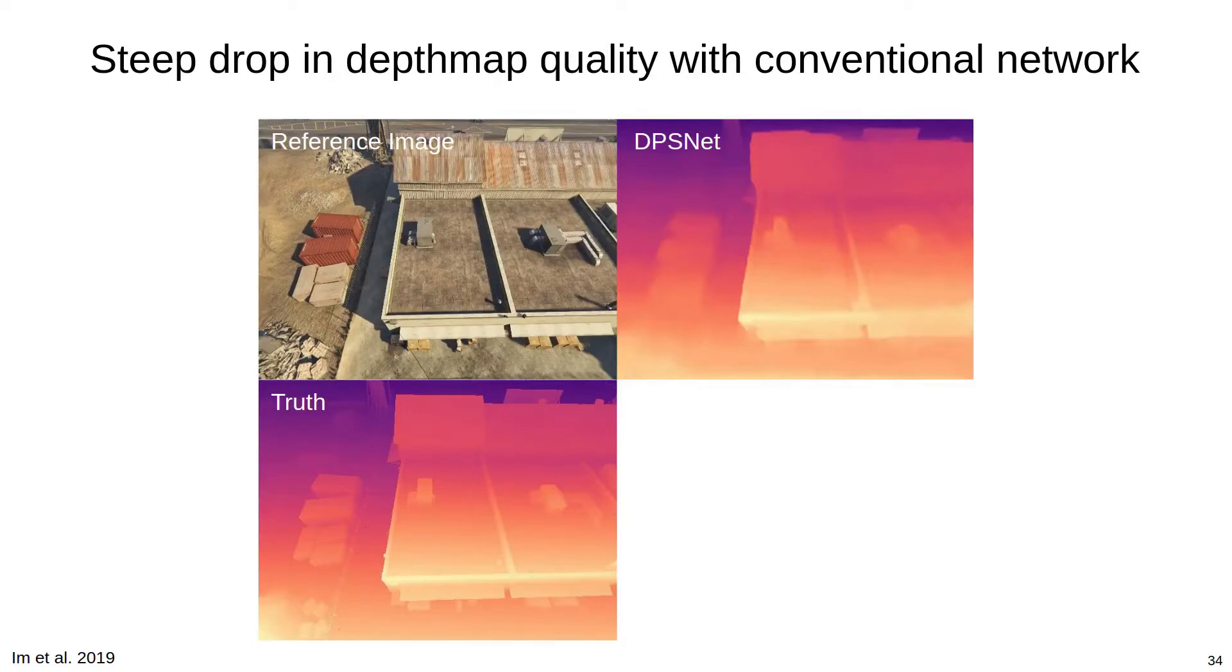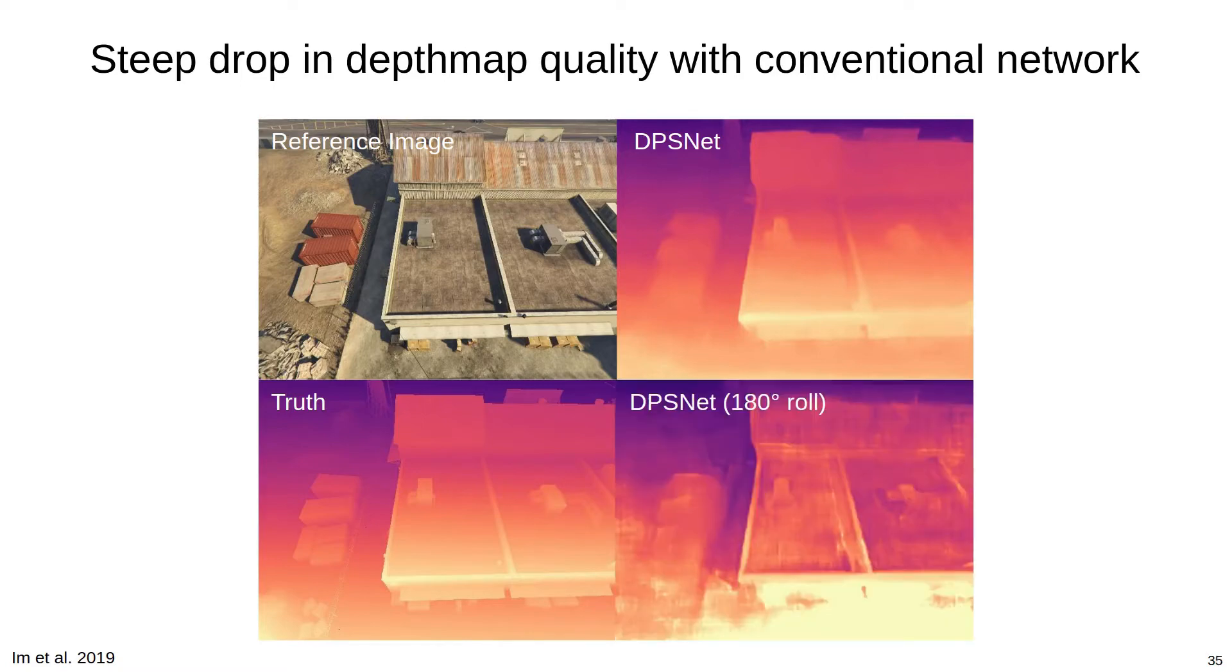Here we show an example depth map produced by DPSNet, a state-of-the-art learned MVS network from Im et al., trained on normal images. The depths produced when tested with normal images look good when compared to ground truth. However, rotating one of the test images by 180 degrees yields a steep drop in depth map quality. Remember, the network is given the same information in both instances, but is not able to compensate for the simple modification of the input.